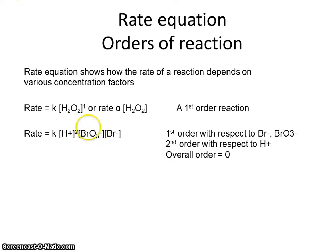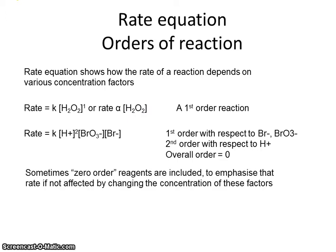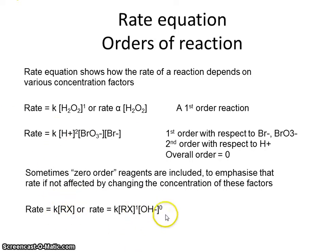Zeroth order means that the substance does not affect the rate of reaction at all. If something is zeroth order, you wouldn't normally include it in the rate equation. However, sometimes zeroth order reagents are included to emphasize that a particular reactant has no effect on the rate — a change in its concentration will not affect the rate. A good example is the hydrolysis of certain halogeno alkanes with hydroxide ions, where the rate depends only on the halogeno alkane concentration and not on the hydroxide ion. The zero is often included in the rate equation to emphasize this, though you are entitled to simply omit the term.